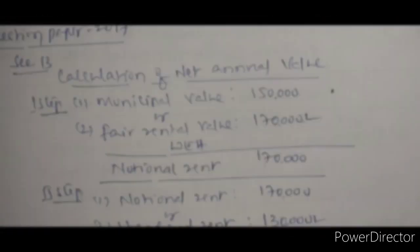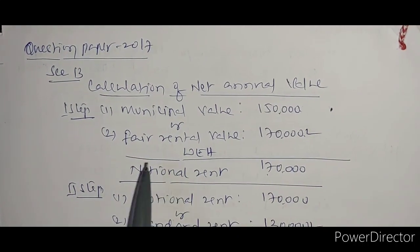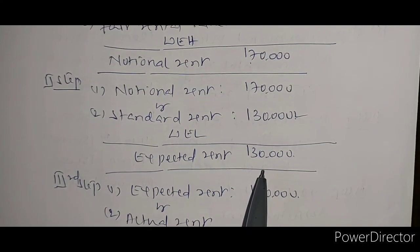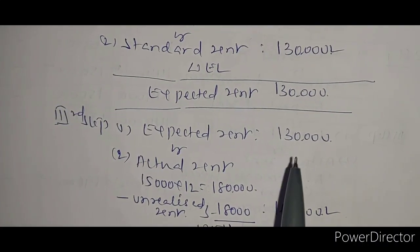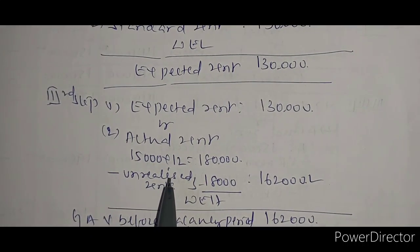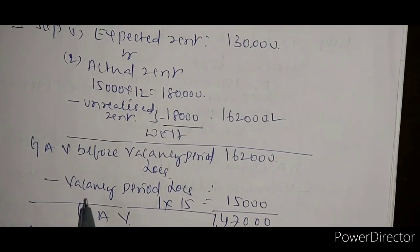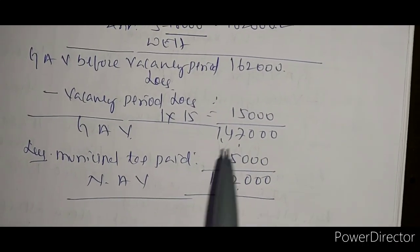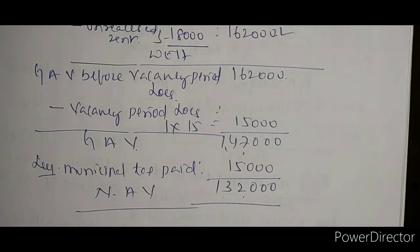Moving to the 2017 paper, Section B: computation of net annual value. Step 1: municipal value or fair rental value, whichever is higher. Step 2: notional rent compared with standard rent — one lakh thirty thousand is least, giving expected rent of one lakh thirty thousand. Step 3: expected rent one lakh thirty thousand versus actual rent received — annual rent fifteen thousand into twelve is one lakh eighty thousand, minus unrealized rent eighteen thousand gives one lakh sixty two thousand. Whichever is higher — one lakh sixty two thousand — is gross annual value before vacancy period loss. Deduct vacancy period loss of fifteen thousand; actual gross annual value is one lakh forty seven thousand. Deduct municipal tax paid fifteen thousand; net annual value is one lakh thirty two thousand.